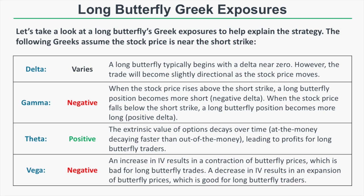The gamma of a long butterfly is negative. When the stock price rises above the short strike, the butterfly becomes slightly short — its position delta becomes negative. When the stock price falls below the short strike, the position delta becomes more positive. This makes intuitive sense: you want the stock at your short strike at expiration, so if price rises above it, your negative delta reflects the desire for price to come back down, and vice versa.